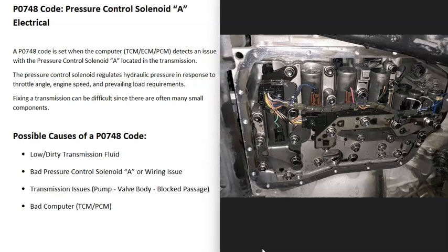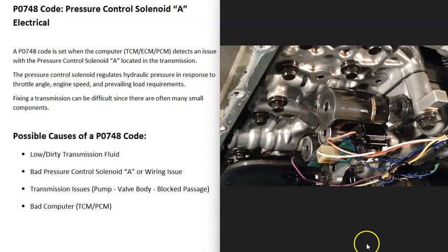Transmissions have a lot of solenoids built into them that are all doing different things. One of these solenoids called pressure control solenoid A is having some kind of issue. It's not doing what it's supposed to be doing, so the computer is sending out this P0748 code and it'll have to be troubleshot.